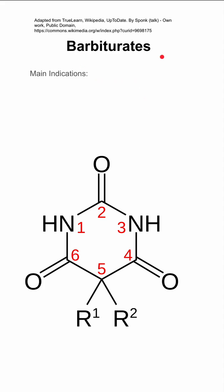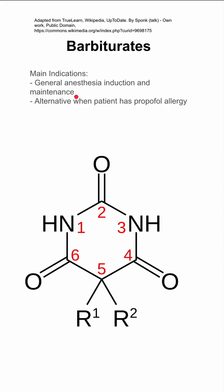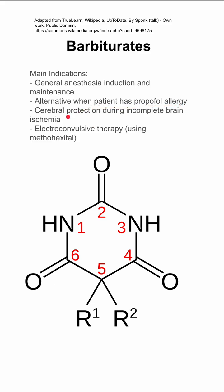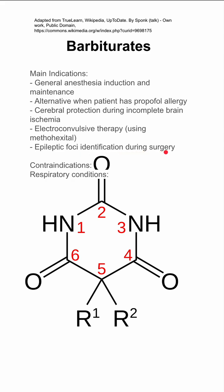Here are some notes on barbiturates. The main indications for using barbiturates are induction of general anesthesia as well as maintenance. They've largely been replaced by propofol, but are still a suitable alternative when the patient has a propofol allergy. They can be used for cerebral protection during incomplete brain ischemia, as well as for electroconvulsive therapy using methohexital specifically. They can also be used to identify epileptic foci during surgery.